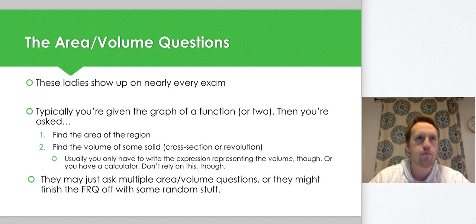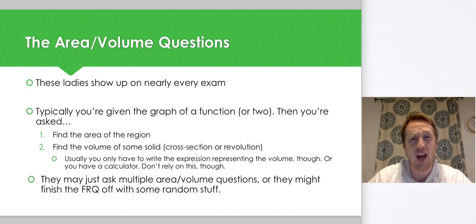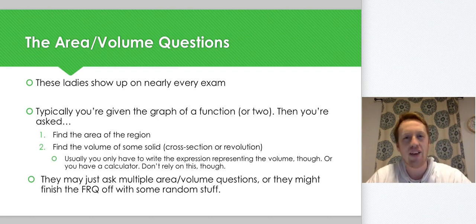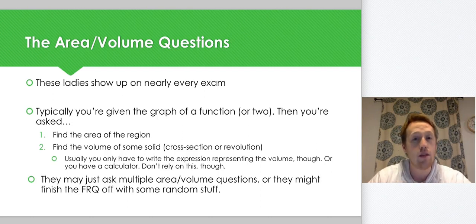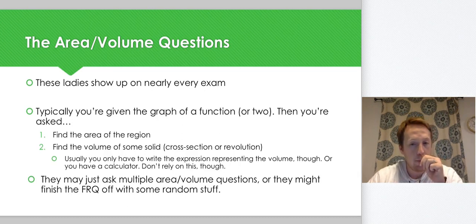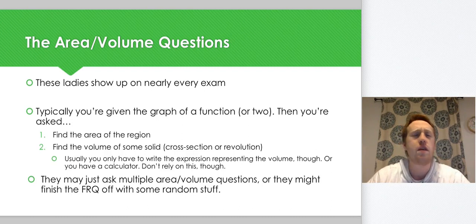Usually for revolutions you don't actually end up calculating it — you just write the expression, or you have a calculator and do it there. That said, sometimes it does show up that you have to do it by hand. Also, they might ask multiple area or multiple volume questions, or fill it out with some random stuff — it could go either way.